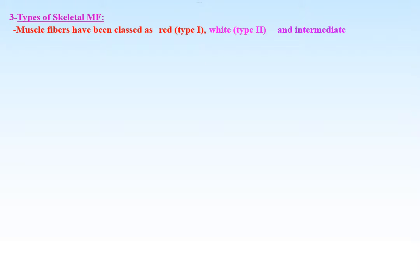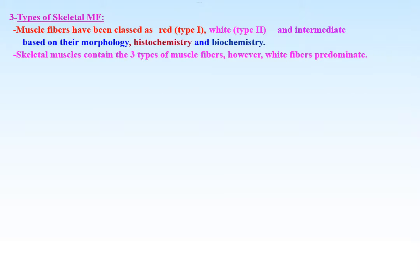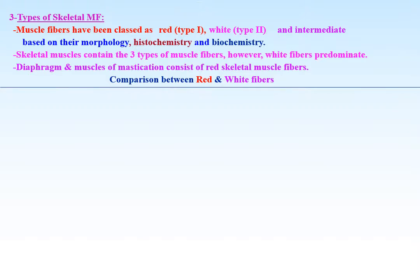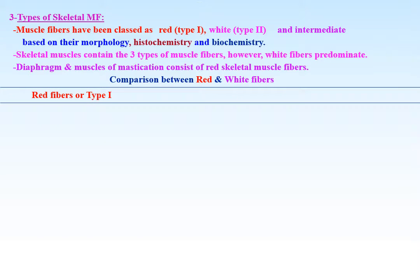Types of skeletal muscle fibers: muscle fibers have been classified as red (type 1), white (type 2), and intermediate, based on their morphology, histochemistry, and biochemistry. Skeletal muscles contain all three types of muscle fibers; however, white fibers predominate except in the diaphragm and the muscles of mastication, which consist mainly of red skeletal muscle fibers.